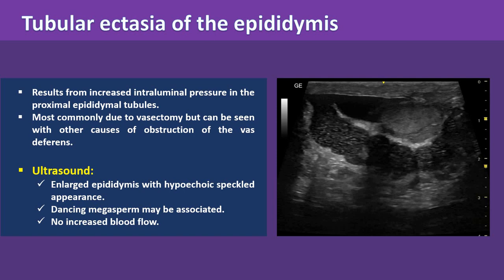Tubular ectasia of the epididymis results from increased intraluminal pressure in the proximal epididymal tubules, most commonly due to vasectomy, but can be seen with other causes of obstruction of the vas deferens. On ultrasound, the epididymis is enlarged with a hypoechoic speckled appearance. This appearance results from linear hypoechoic structures with echogenic walls within the enlarged epididymis. Dancing megasperm may be associated.